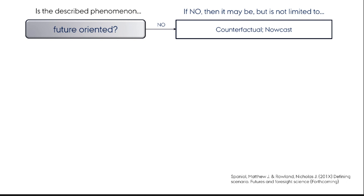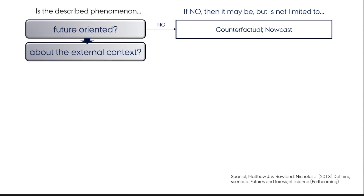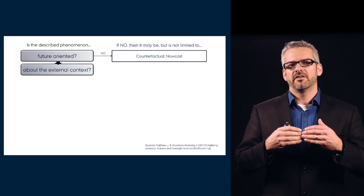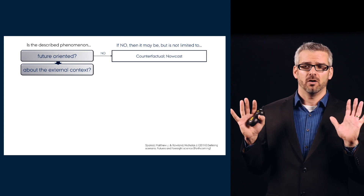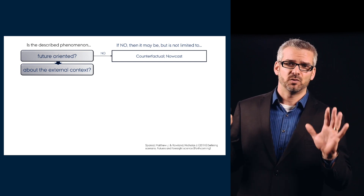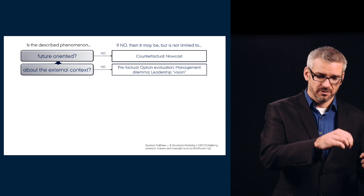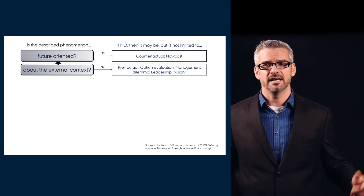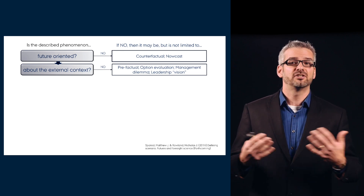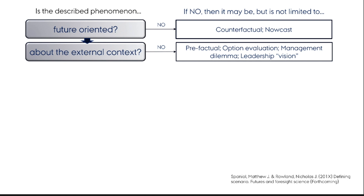The second question: is the described phenomenon future-oriented and about the external context? Scenarios in this tradition have the notion that they are out of our control — something we will have to react to. If they're not about the external context in organizational strategy, we're talking about other thought experiments, such as the pre-factual: if we invest in investment A, how would our future look? If we invest in investment B, how would our future look in 10 years? The pre-factual is very close to option evaluation, management dilemmas, and leadership visions — where the future is out there but we can control and enact it.